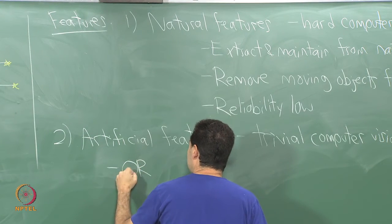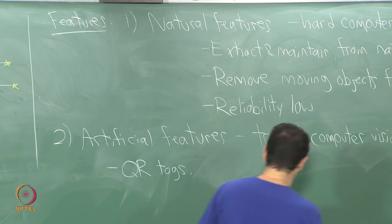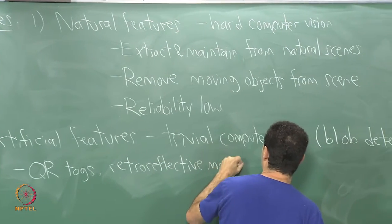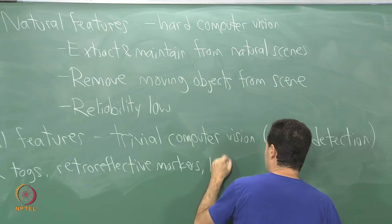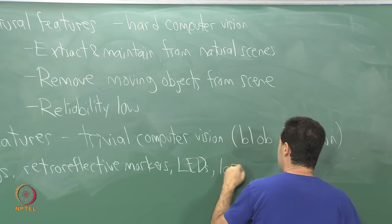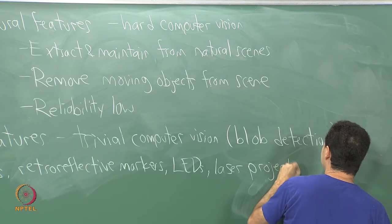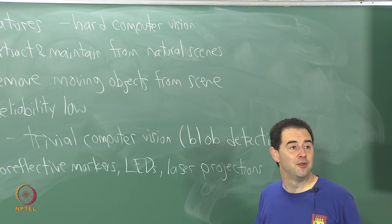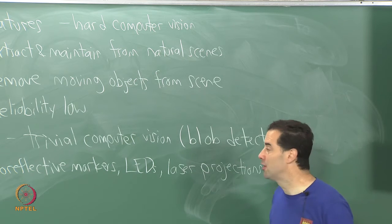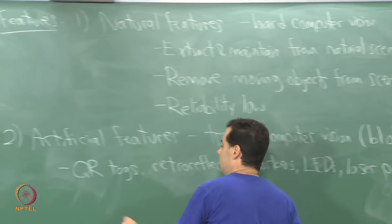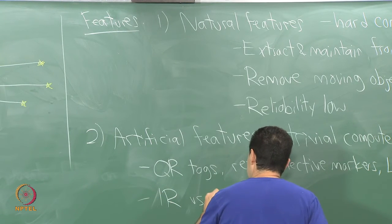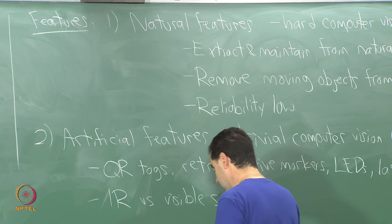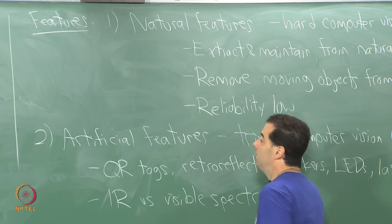Some examples: you could use QR tags, retro-reflective markers, LEDs, or laser projections. Some of these could be designed to work in the infrared spectrum so that they do not interfere with visible light — humans tend not to notice them, and there is not the kind of interference that may cause other troubles. So the choice is IR versus visible spectrum.